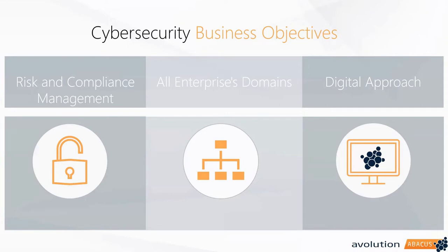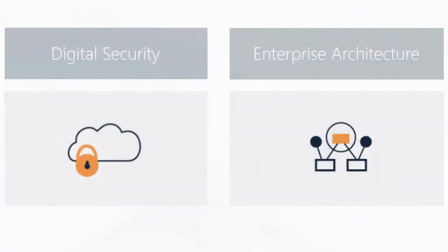The key objective is risk and compliance, and the digital approach is how we achieve that. Looking at security implementation in a legacy style may not cover the whole picture. When looking at digital security, we have two main contexts: digital security itself, and enterprise architecture — we need to see both sides of the same practice together.